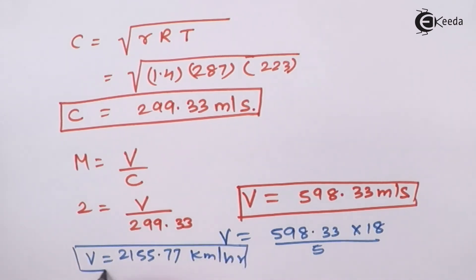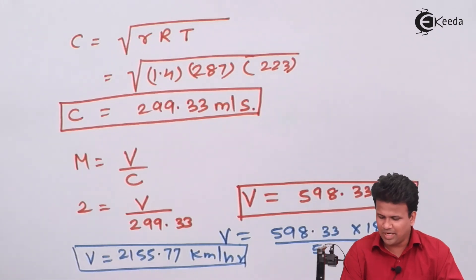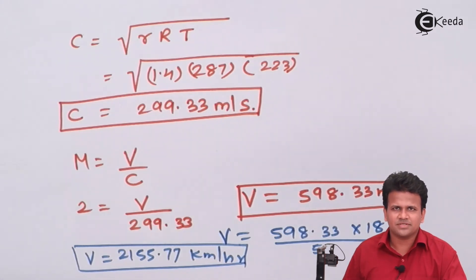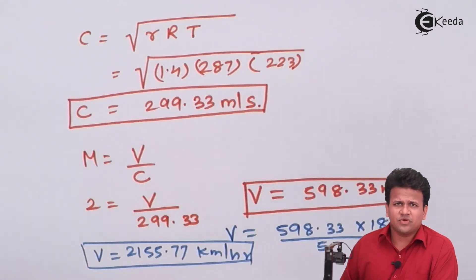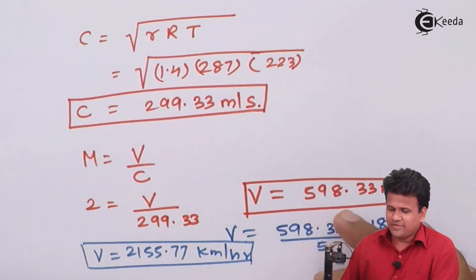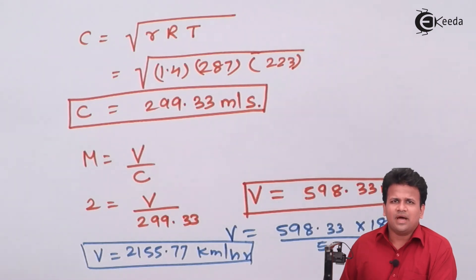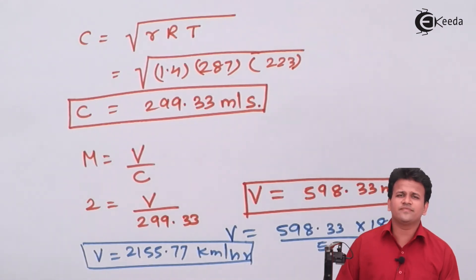So the aircraft is traveling at a velocity of 2155.77 kilometers per hour, which is a considerably high velocity at Mach number 2 at that height. We have calculated the velocity of sound as 299.33 meters per second and the velocity of the aircraft or fluid as 598.33 meters per second. I hope you have understood how to use the Mach number to calculate the velocity of sound and the velocity of the fluid.